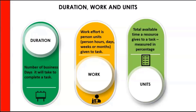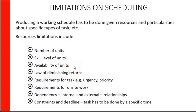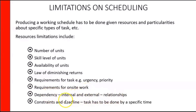So this is what you have to be balancing as you delve into allocation of resources. Producing a working schedule has to be done given resources and particularities about specific types of tasks. Resource limitations include number of units, skill level of the units, and availability of units — you may want somebody on the project 100% of the time and only get 50%. The law of diminishing returns: after a time, you add more resources and get less and less production. Requirements for the task may include urgency or priority, requirements for onsite work, dependency, internal and external relationships, and constraints and deadlines — the task has to be done by a specific time.